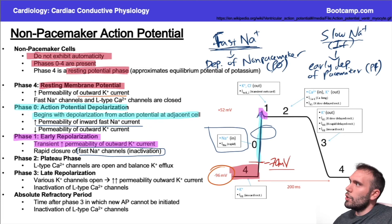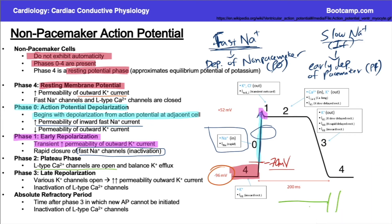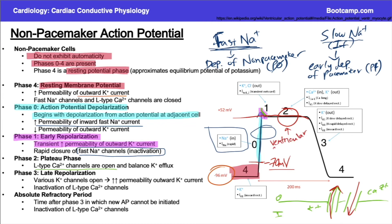As that dip starts to happen, all of the L-type calcium channels start to open. Picture it this way: you have potassium leaving and calcium coming in to compensate. Those opposing charges balance each other during phase two — potassium is leaving and calcium is coming in — giving you this sustained, higher level of membrane potential. This is the plateau phase, and this is the area where ventricular contraction occurs — ventricular systole.